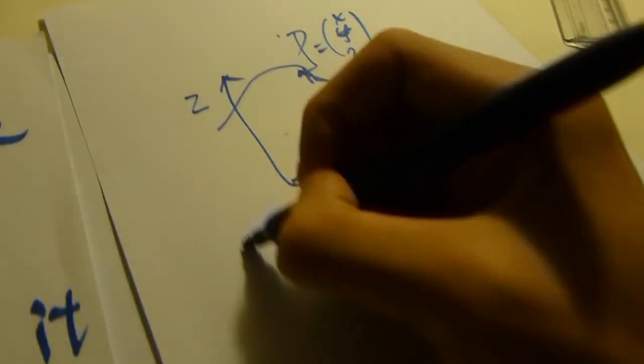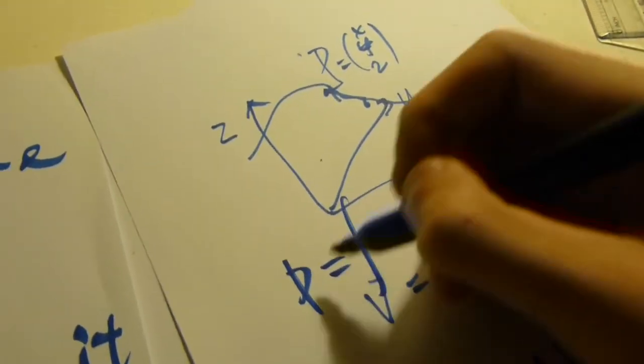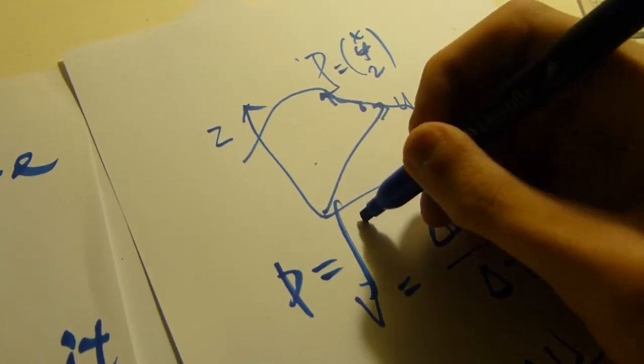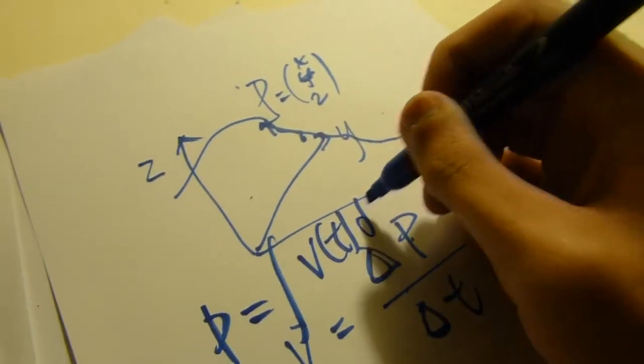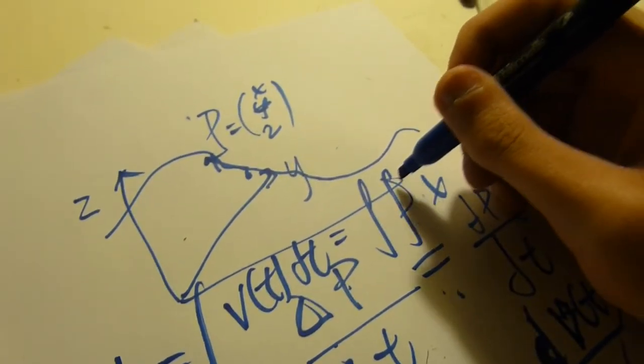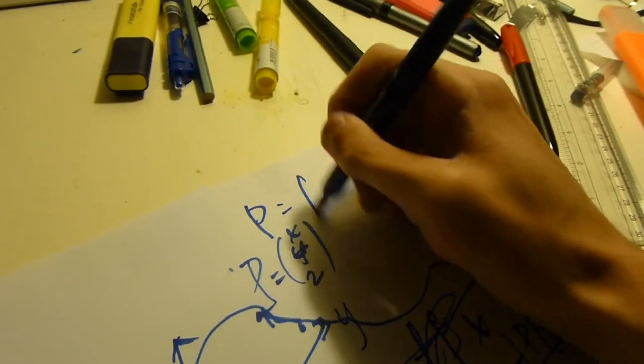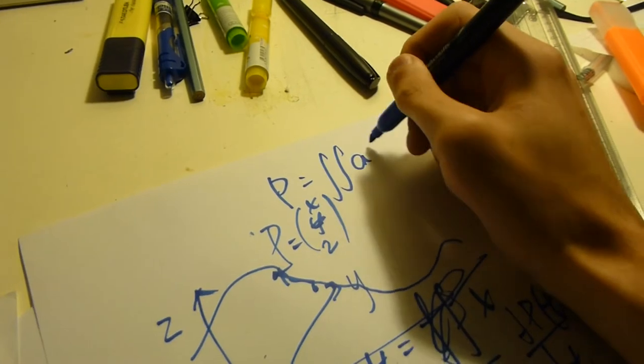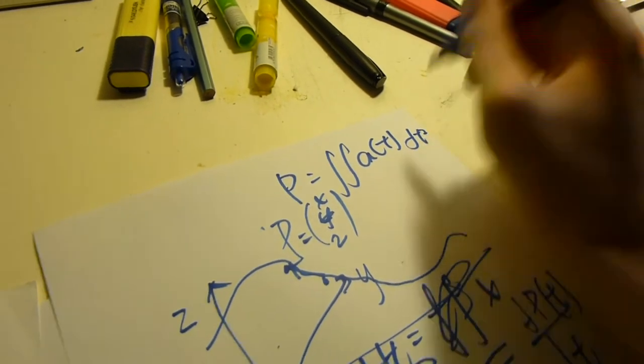So inversely, you could solve position as the integral of velocity with respect to time, which you could integrate a second time.